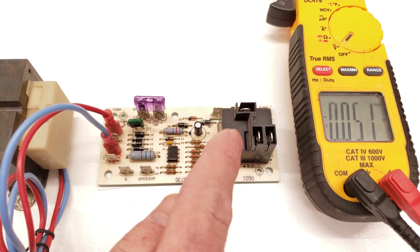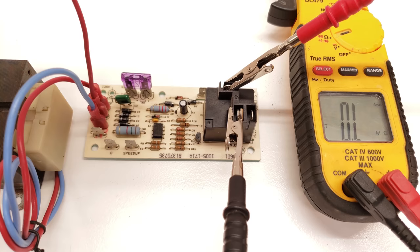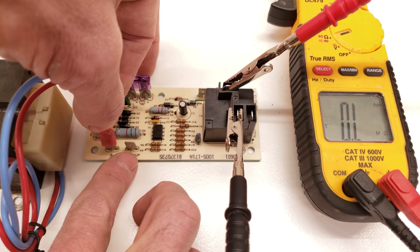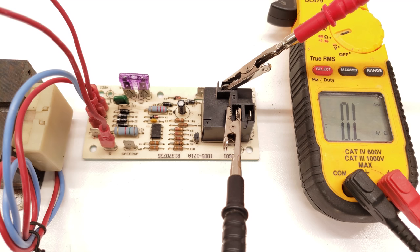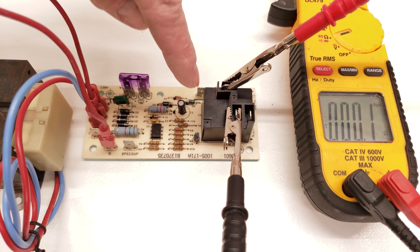We have our multimeter switched to resistance and we're reading OL. We also have a wire on our R and we're going to put that right onto the G, just like we're telling the thermostat to turn the fan on. We're going to wait a few seconds - it should be anywhere from 2 to 7 seconds. It's already initiated and now we're closed.